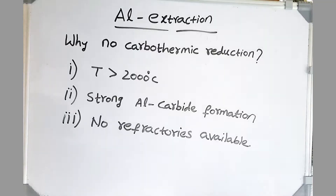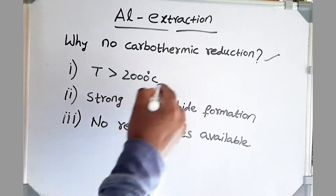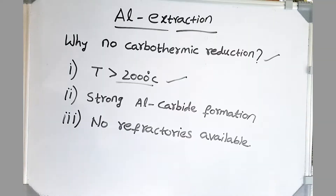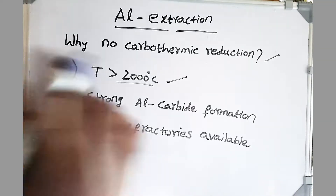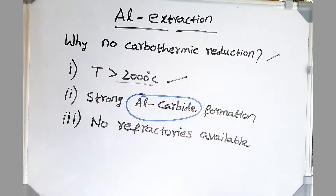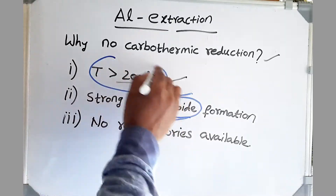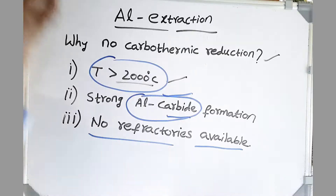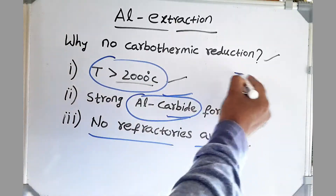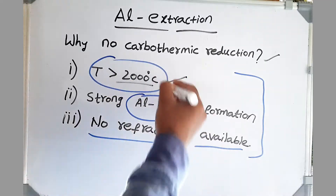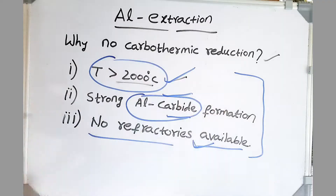Now let's discuss why we can't do carbothermic reduction of aluminum. As aluminum oxide is very stable, the temperature required for carbon to reduce alumina is more than 2000 to 3000 degrees centigrade, which is very high. At this high temperature, aluminum carbides are more stable, so instead of getting pure aluminum, we get aluminum carbide. It is also difficult to extract aluminum from aluminum carbide. Even if we try to form it at these high temperatures, we do not have refractories available to work at such temperatures. So this is not even economical — even though carbon is our cheapest reducing agent, the whole process becomes expensive because of the refractories and high temperature requirements.